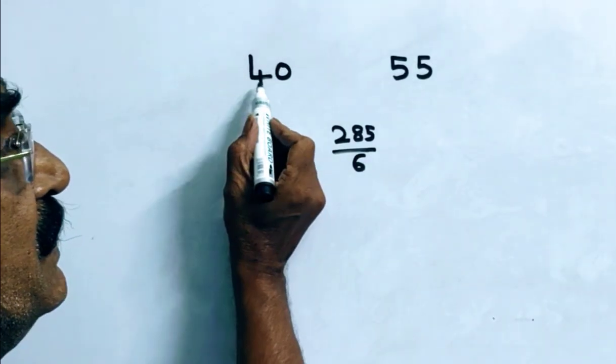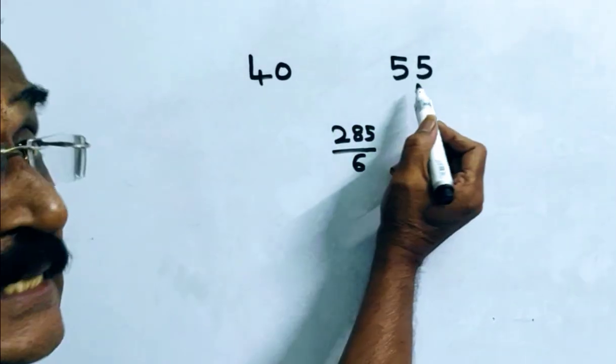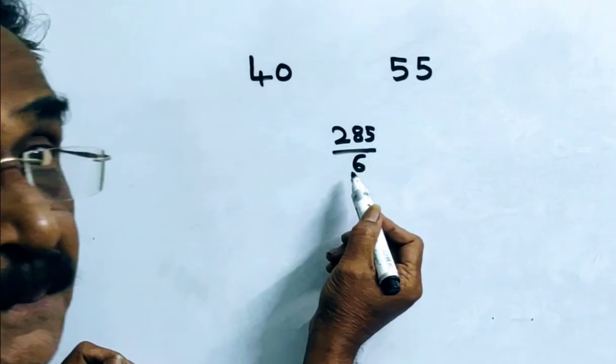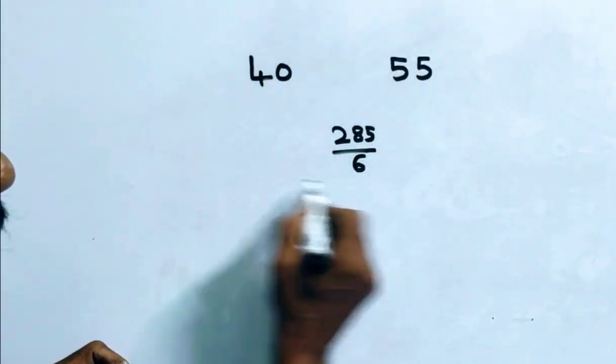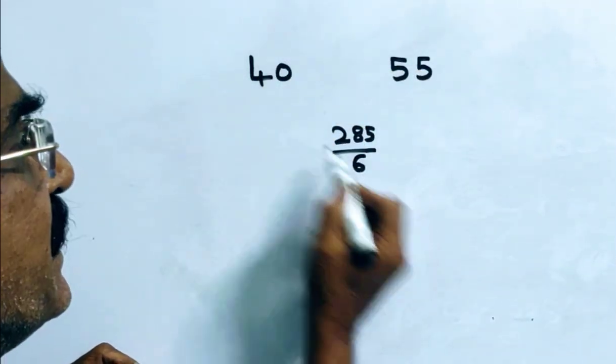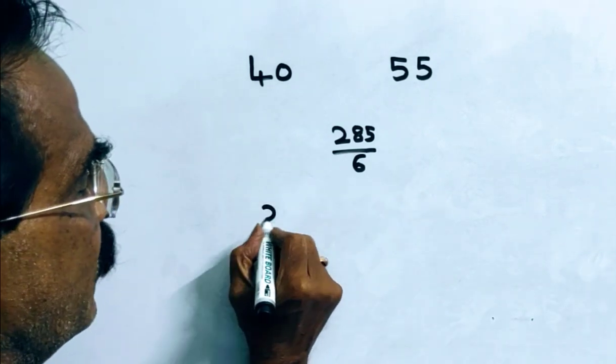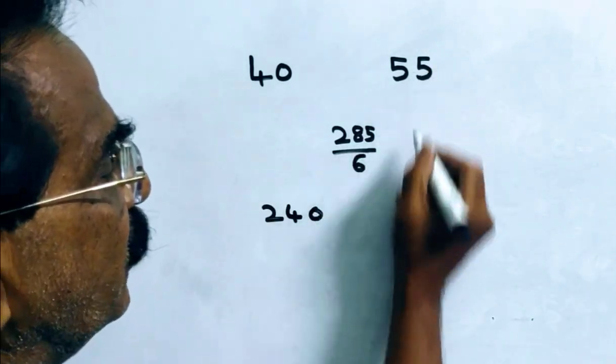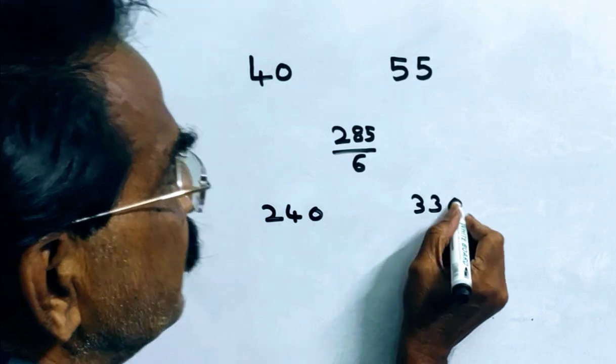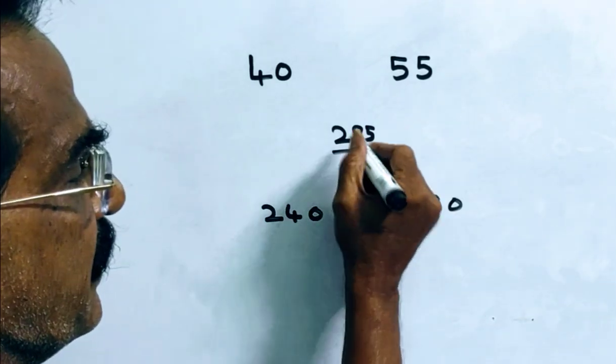This is cheaper speed. This is dearer speed. This is mean speed. Let us multiply these factors by 6. 6 into 40, 240. 6 into 55, 330. 6 into 285 by 6, 285 remains.